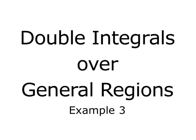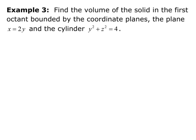In this video, we discuss double integrals over general regions, example 3. Find the volume of the solid in the first octant bounded by the coordinate planes, the plane x equals 2y, and the cylinder y squared plus z squared equals 4.